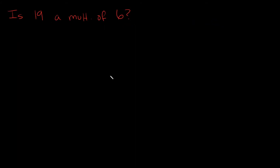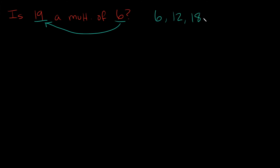Is nineteen a multiple of six? Does six fit into nineteen evenly? When we count by sixes, do we land on nineteen? Let's try: six, twelve, eighteen, twenty-four. We did not land on nineteen — nineteen would fall somewhere between eighteen and twenty-four. So six does not fit into nineteen evenly, meaning no, nineteen is not a multiple of six.